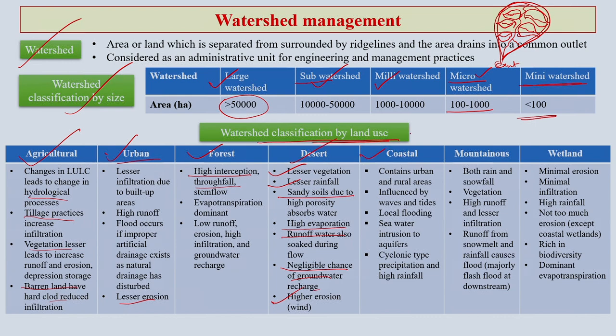Then comes watersheds in the coastal area. These contain both urban and rural sides, are influenced by waves and tides, local flooding, seawater intrusion, and cyclonic type of precipitation with very heavy rainfall. These are some of the characteristics of watersheds located in a coastal area.